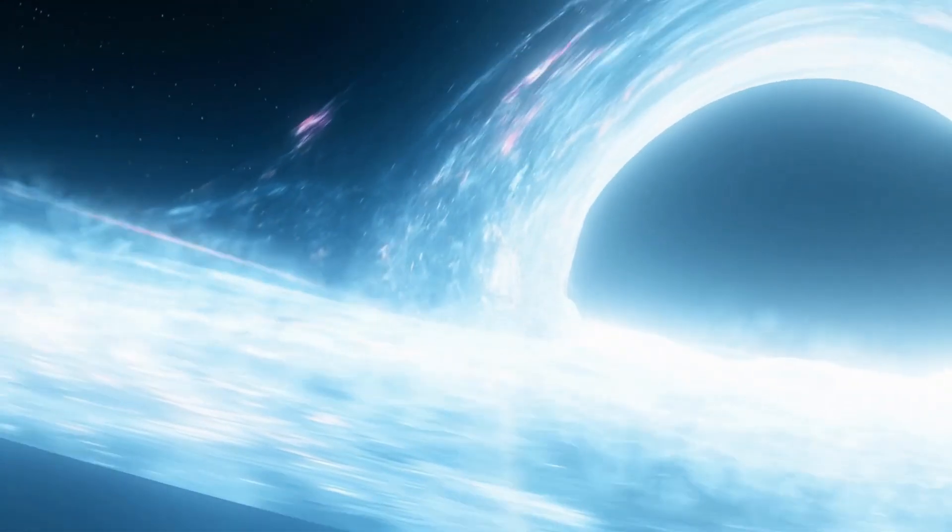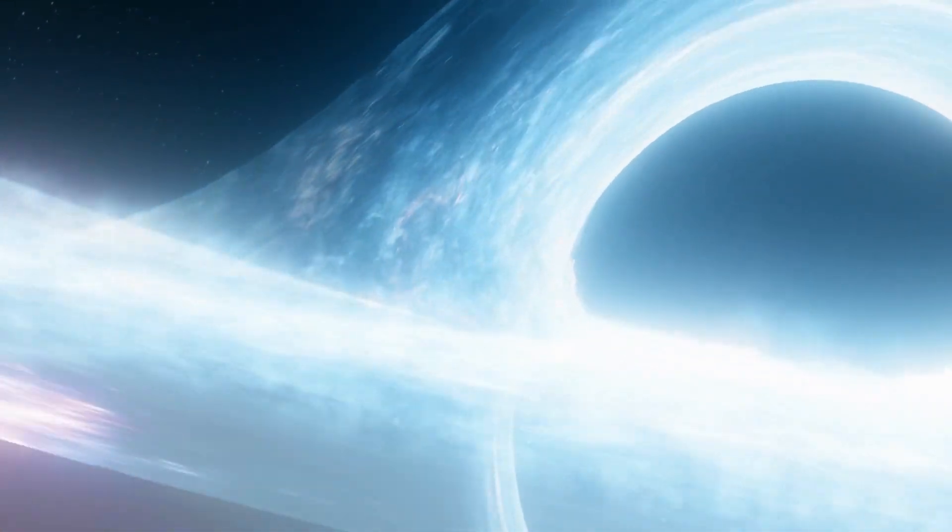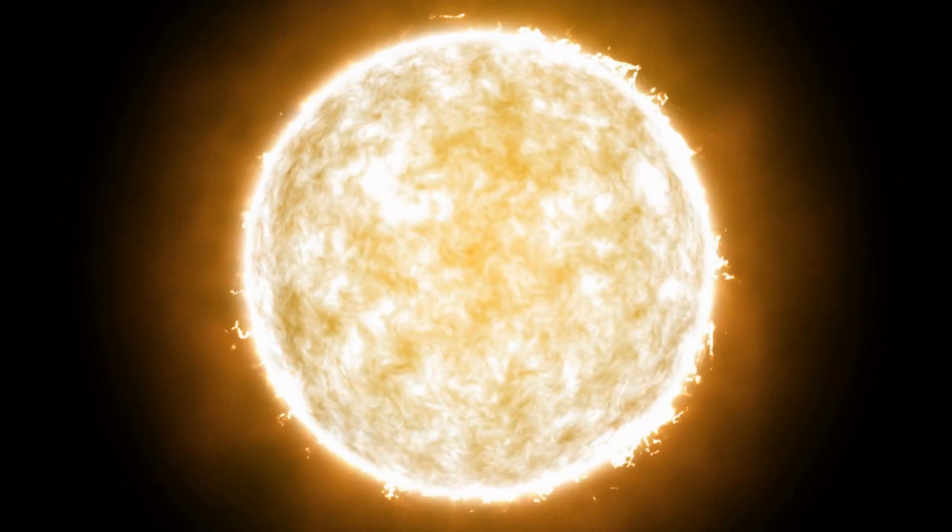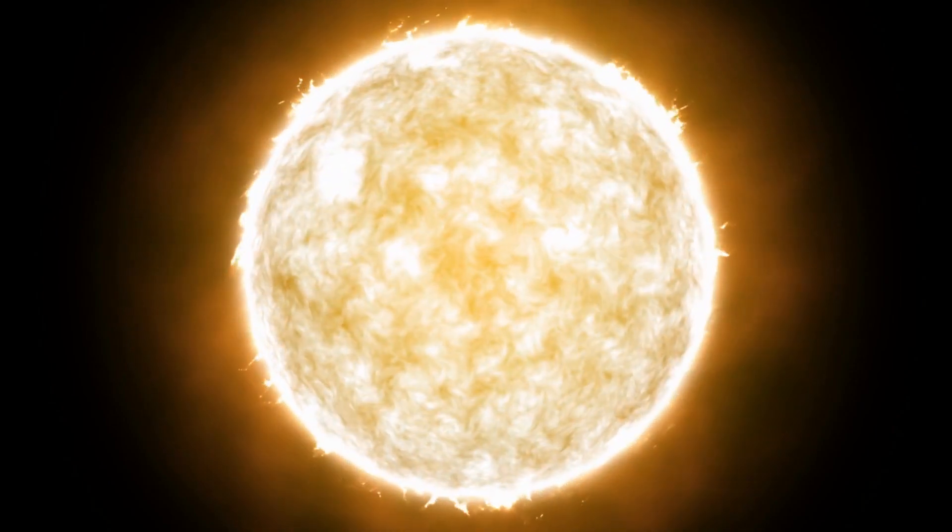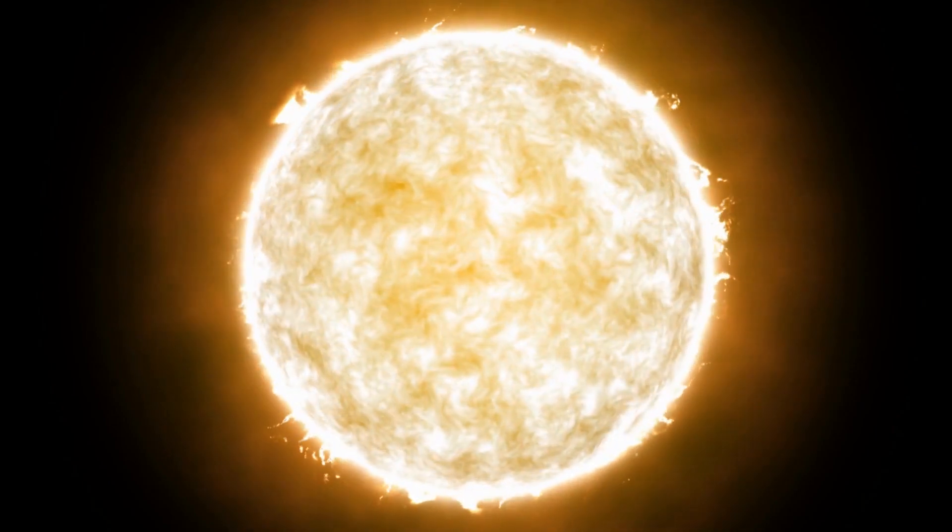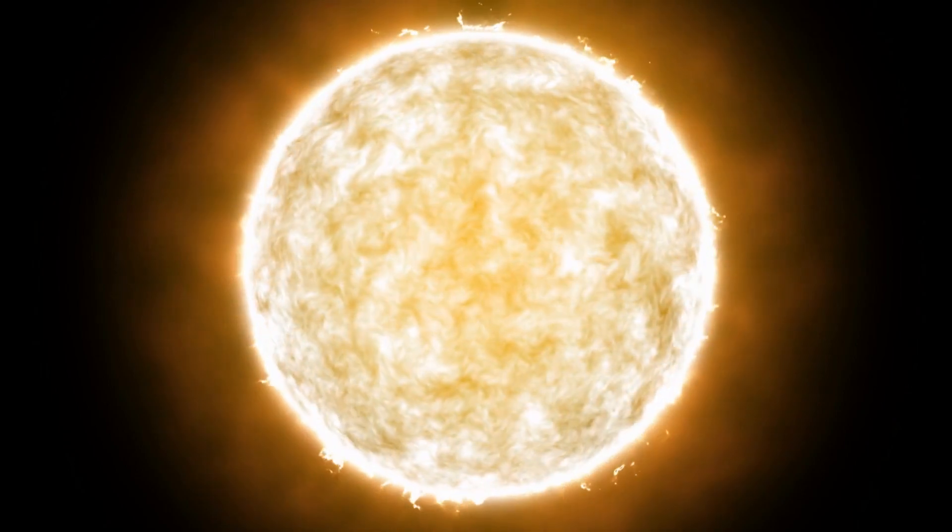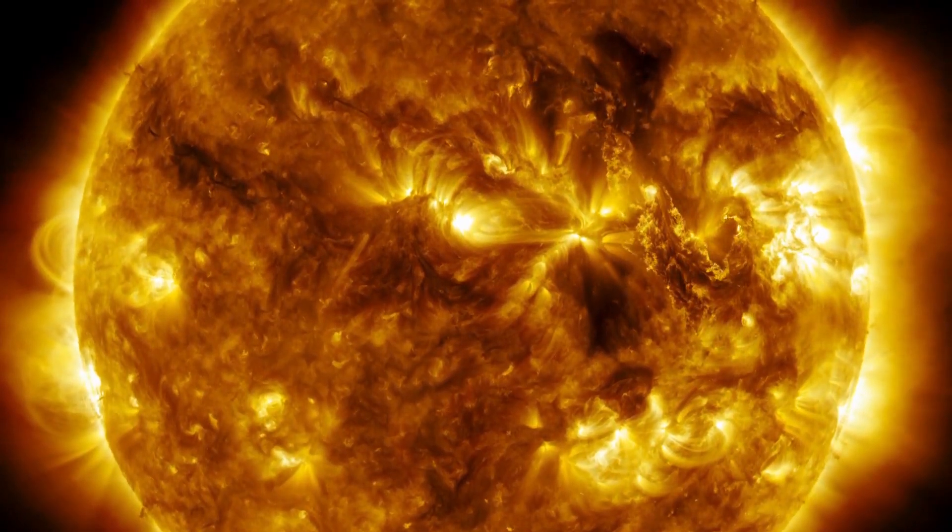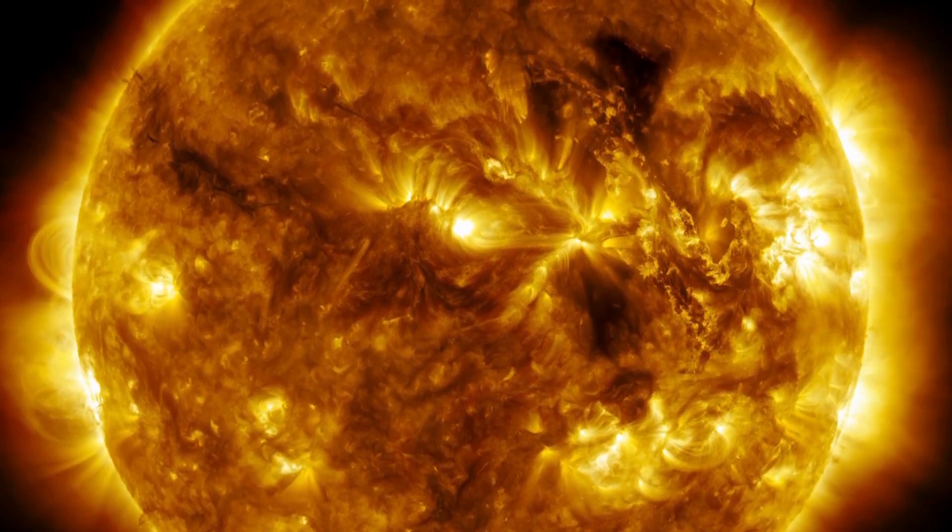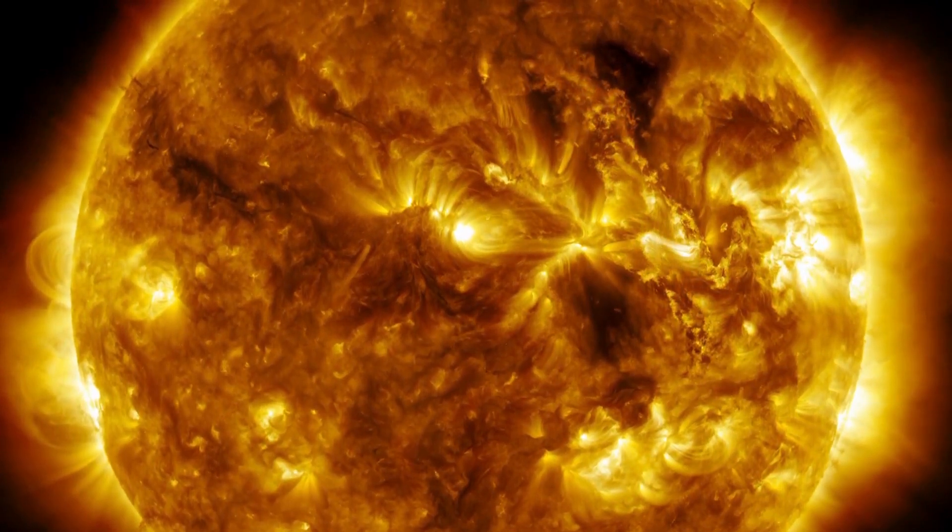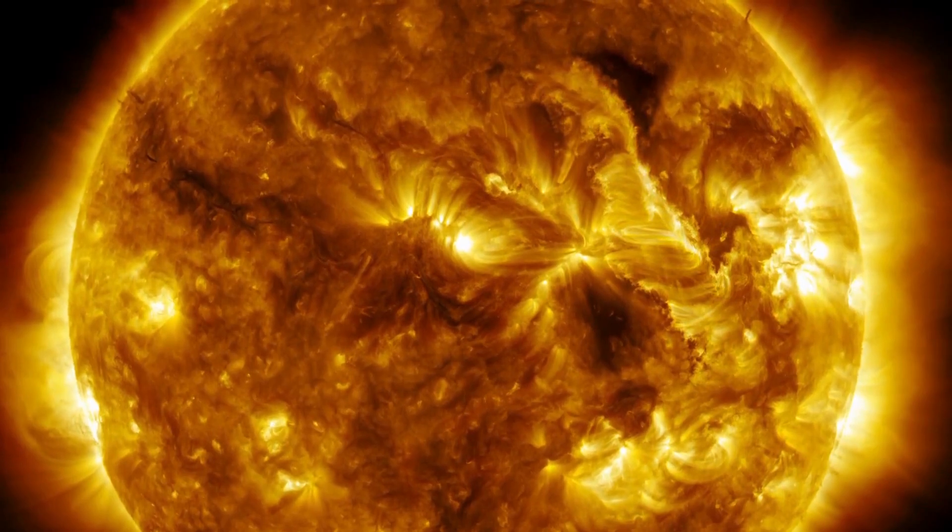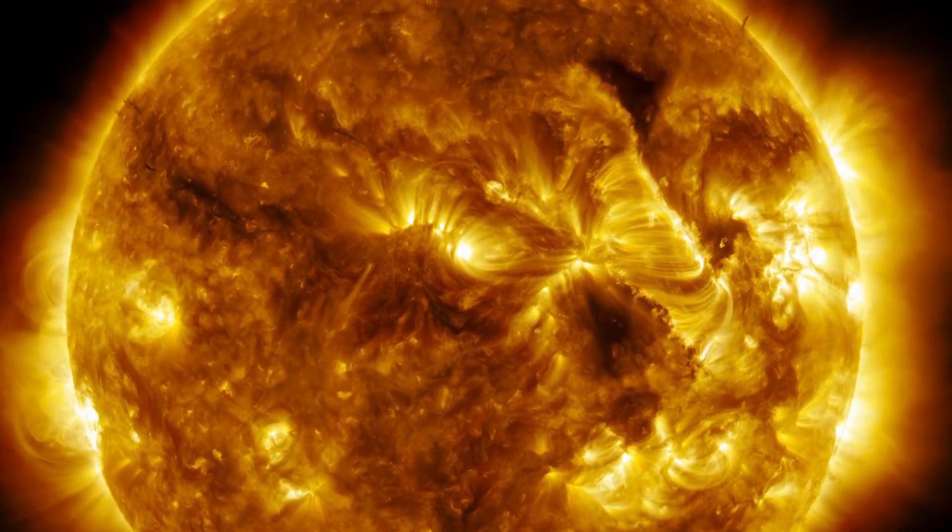To understand how black holes formed and what happens inside them, it is necessary to go back to the life cycle of a massive star. These massive stars are true cosmic powerhouses fueled by the incredible nuclear fusion reactions that take place in their cores. The sun's energy source comes from the fusion of hydrogen and helium. During this process, two hydrogen atoms combine in a collision and form a helium atom. As long as the star has enough hydrogen to carry out the fusion, it can maintain its brightness.